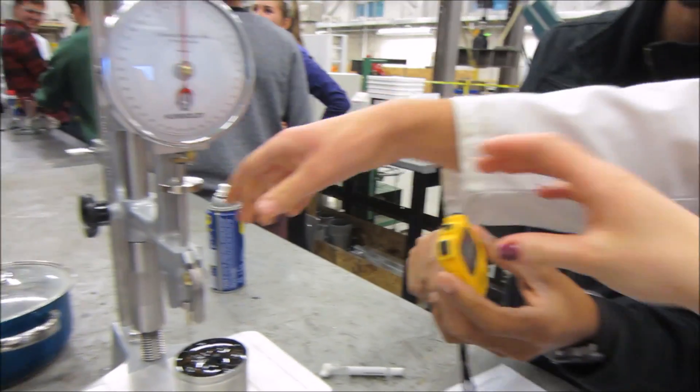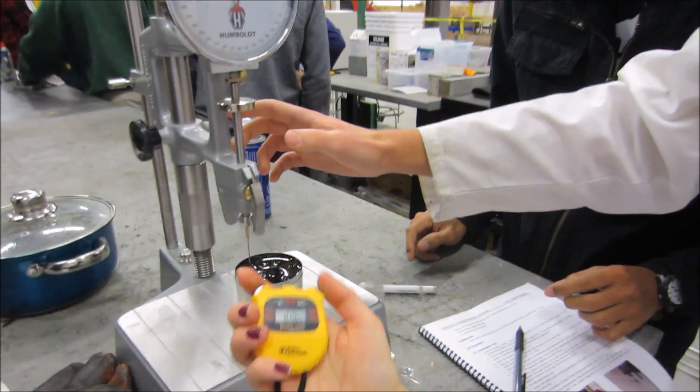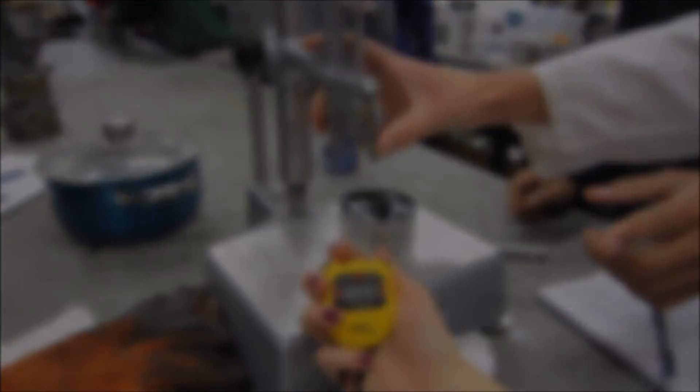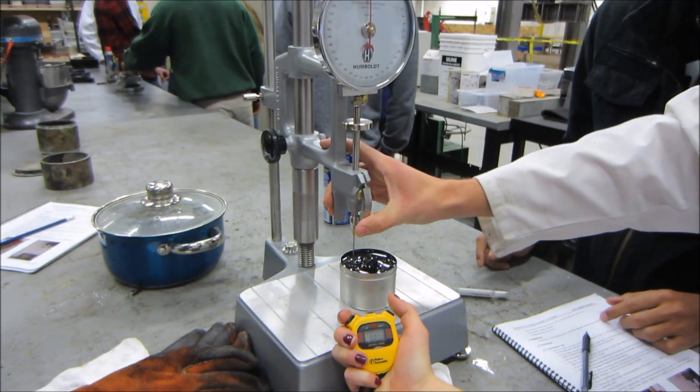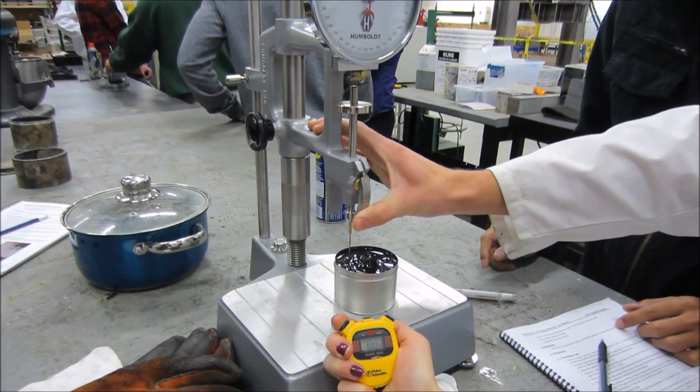Set the dial to zero, then release the needle holder to start the penetration of the asphalt. Stop the penetration test after five seconds and take a reading from the dial.